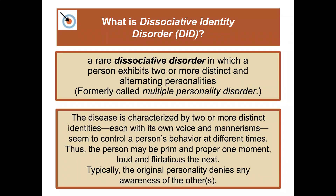Dissociative identity disorder is thought to be a rare disorder in which a person exhibits two or more distinct and alternating personalities — it used to be called multiple personality disorder. The disorder is characterized by two or more distinct identities, each with its own voice and mannerisms, that seem to control a person's behavior at different times. Typically, the original personality denies any awareness of the others.